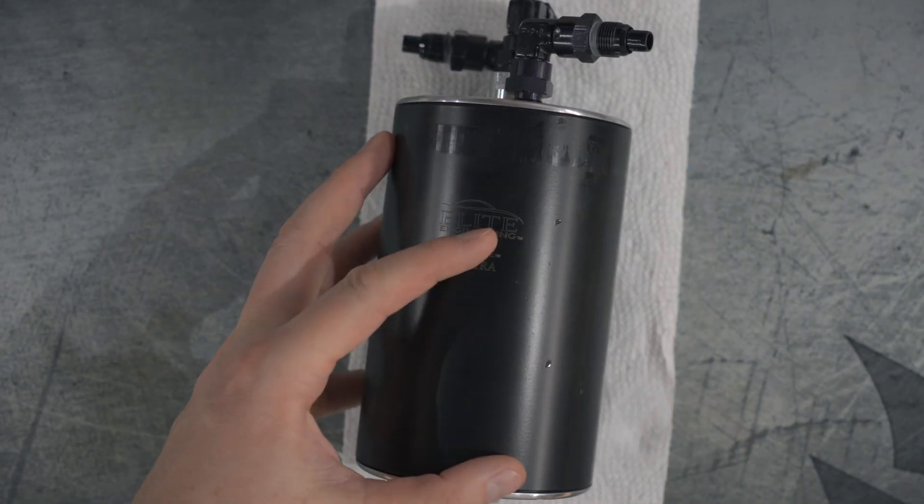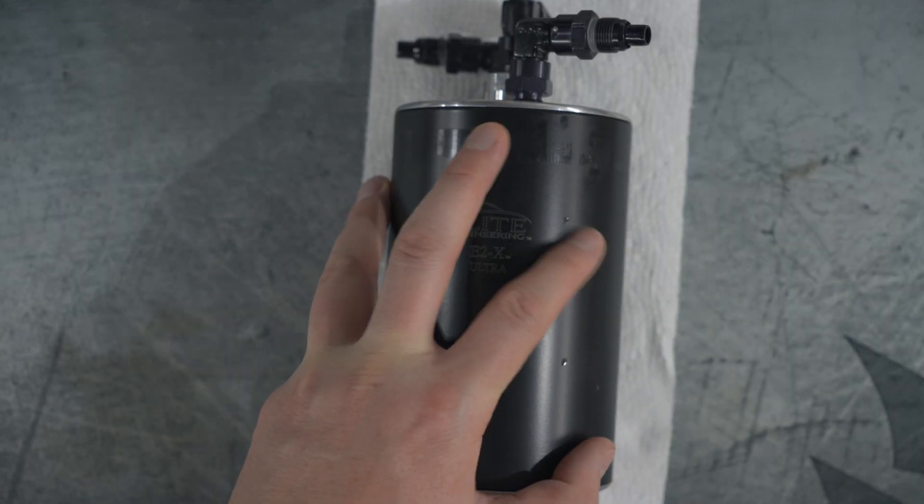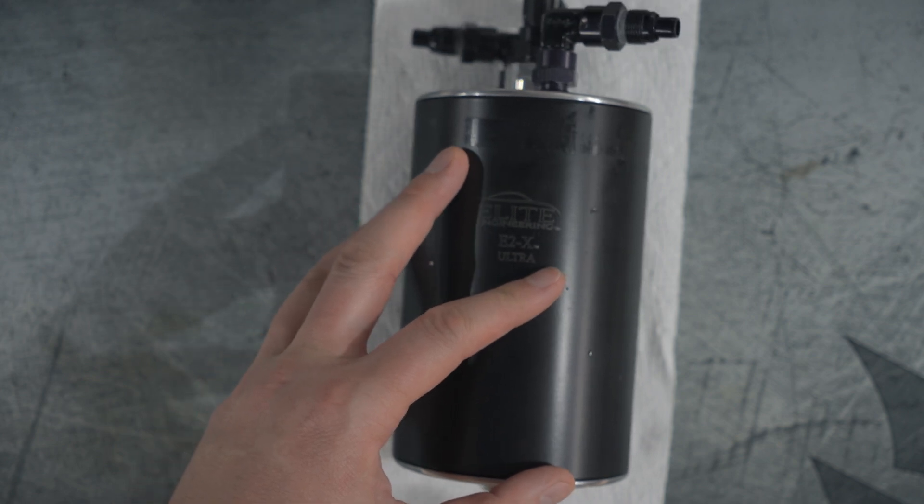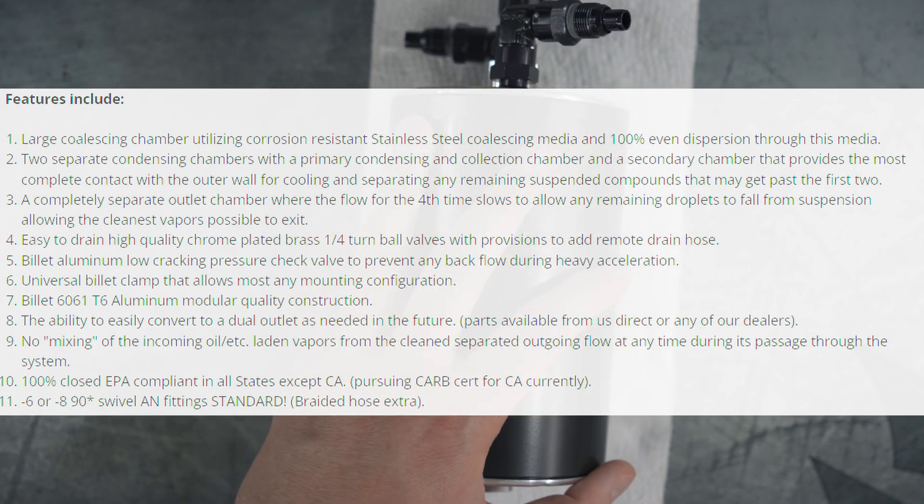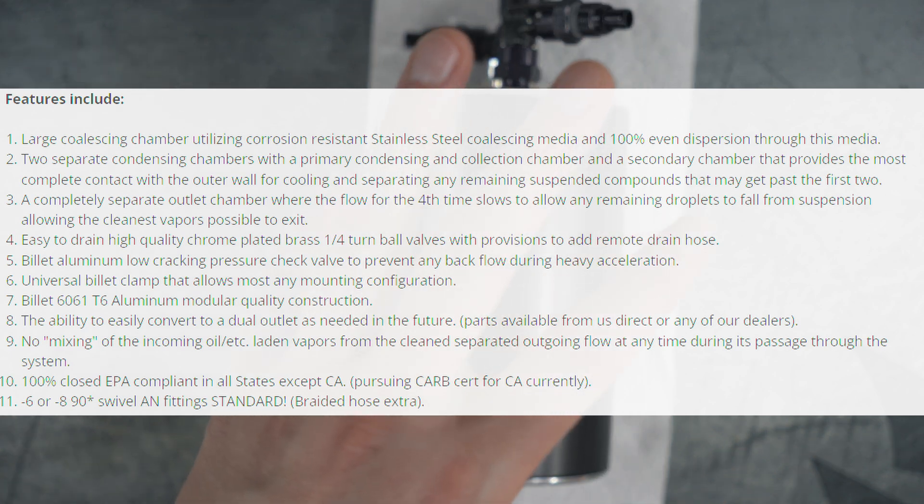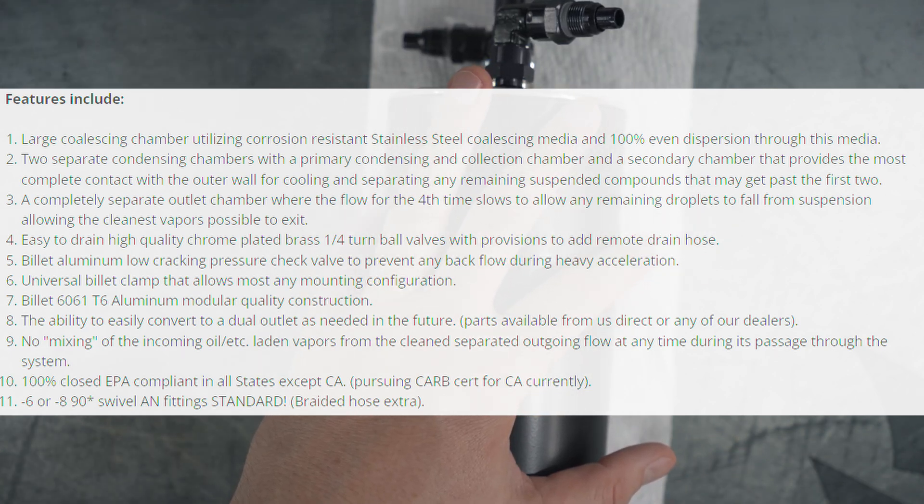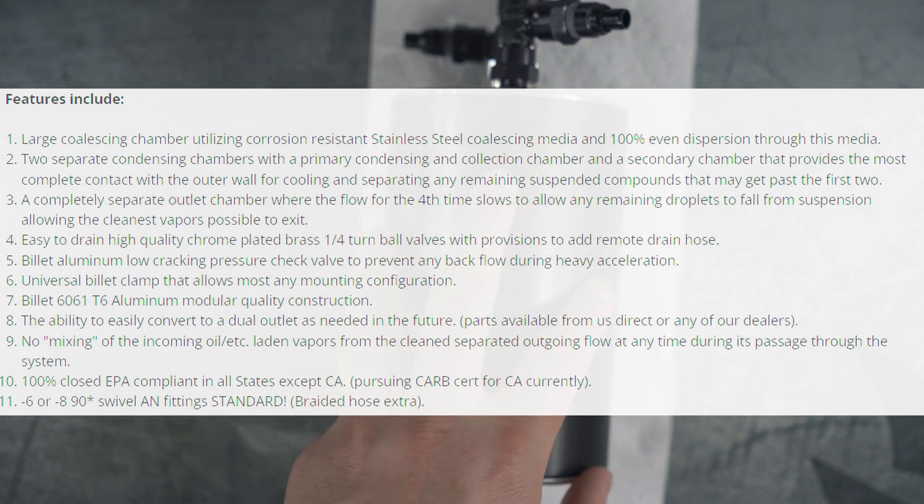Before I open up the E2X Ultra catch can, I wanted to go over some of the features mentioned on the Elite Engineering website. They have a large coalescing chamber using corrosion resistant stainless steel with 100 percent even dispersion through this media. You have two separate condensing chambers with a primary and a collection chamber and that offers the most complete contact with the outer wall for cooling and separating any remaining suspending compounds that may get past the first two. And then you have a completely separate outlet chamber where the flow for the fourth time slows to allow any remaining droplets to fall from suspension, allowing the cleanest vapors as possible to exit.